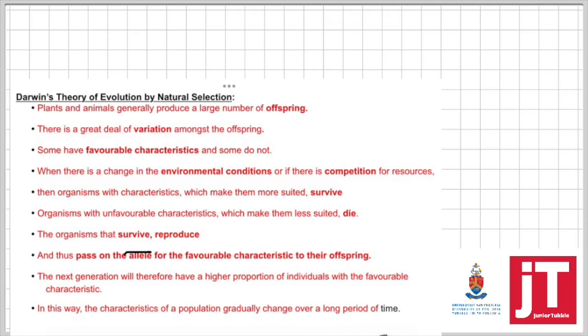The organisms that survive will reproduce and pass on their factor for the favorable characteristics to their offspring, and then from generation to generation until the entire population has the favorable characteristics. You need to know this very, very well, and then again, you must be able to apply this.